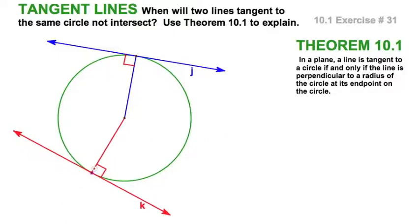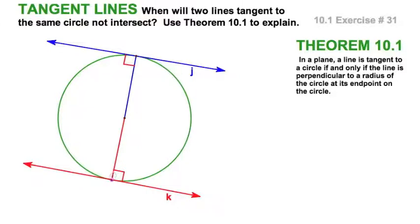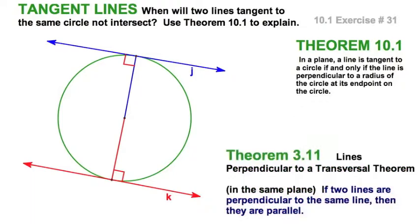But if I were to line them up to make those two radii into one diameter, then I would be saying that means these two lines, by theorem 3.11, they are perpendicular to the same line. Therefore, they are parallel.